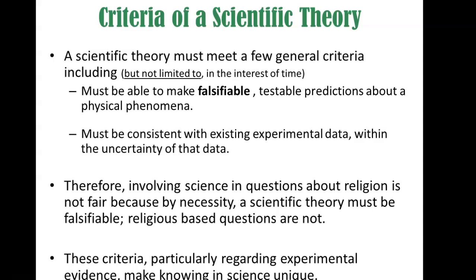Consistent within the uncertainty of that data — and if you take IB Physics you know about uncertainty in measurements. That means you typically develop a scientific theory after some experimentation has already been done, and when building your theory you have to make sure it incorporates the experimental results from the past. It's kind of like backwards testing. If people all over the world have done many experiments with falling objects, your scientific theory should be consistent with that existing experimental data.